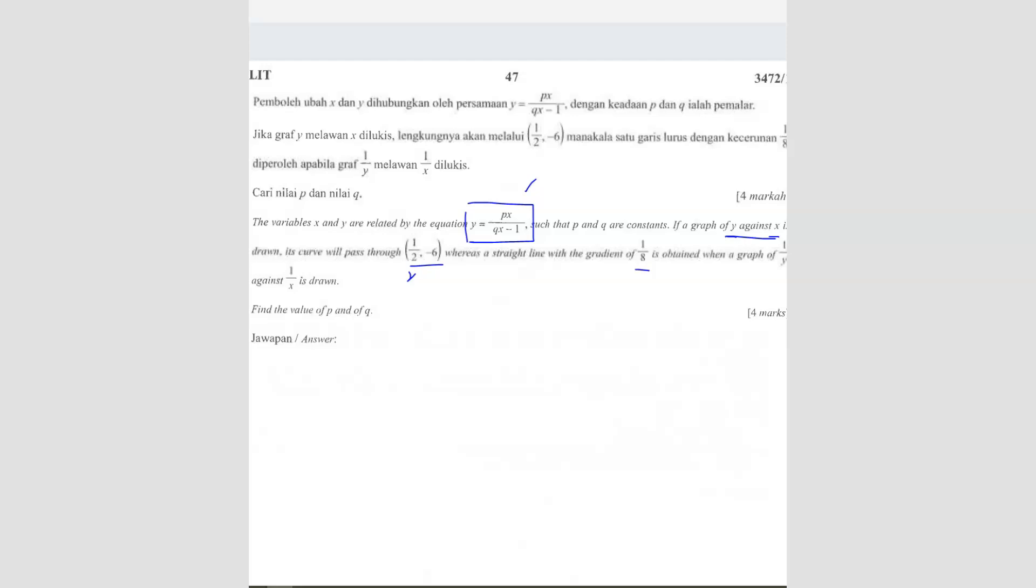So we're going to substitute y. This is x, this is y. So negative 6 equals to p, x is 1 over 2, over q, 1 over 2, minus 1. So I bring this up. So what do I get? I get negative 3q plus 6 equals to 1 over 2p. So this is my first equation.